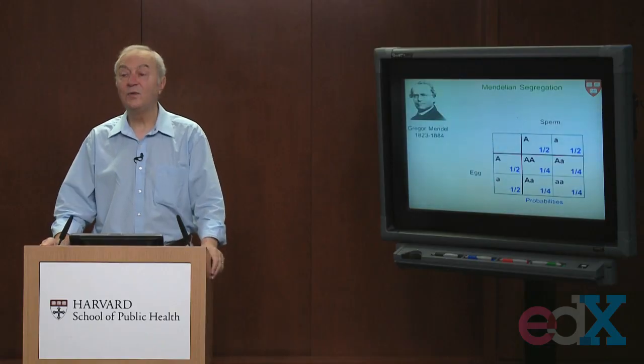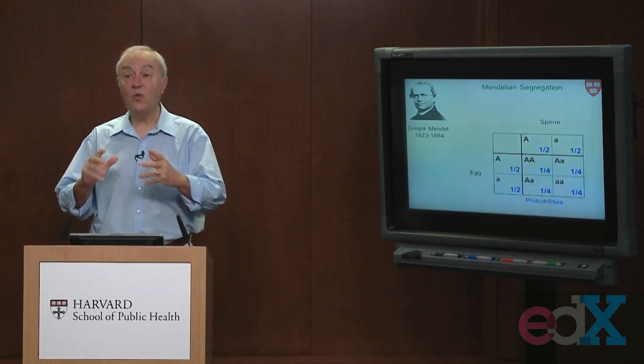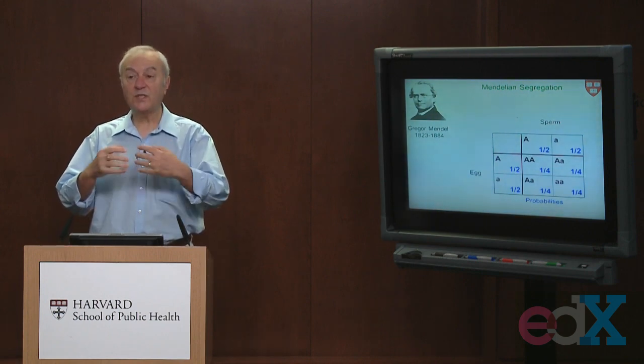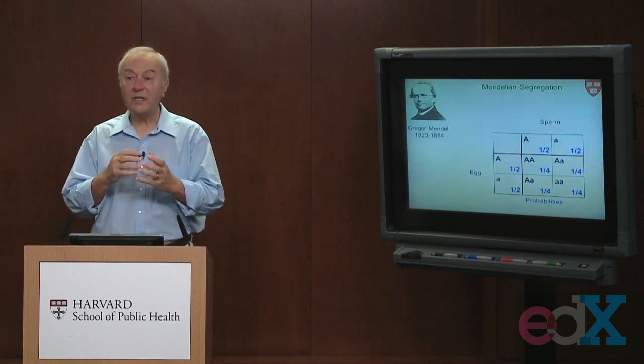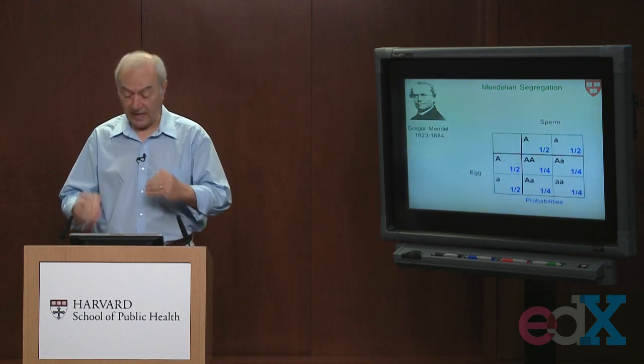So now we've looked at the quincunx to simulate the spinning of a coin. So that's just a single action. Now let's go back to Mendelian segregation and see what we need to do to expand on the quincunx, to expand our model to handle something a little bit more complex. So let's build up.